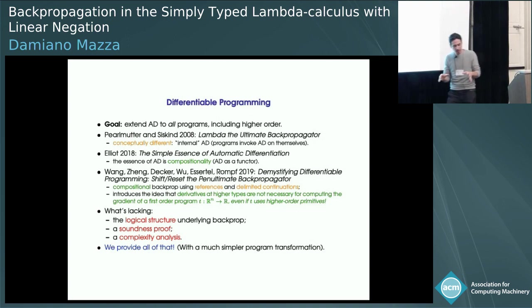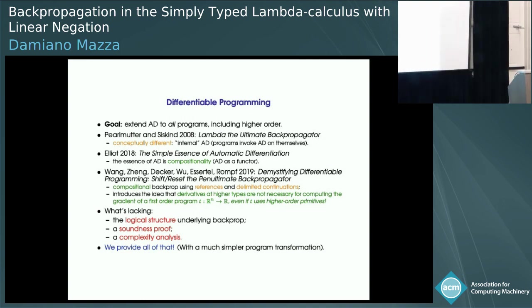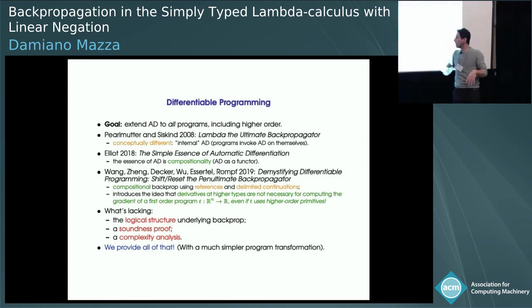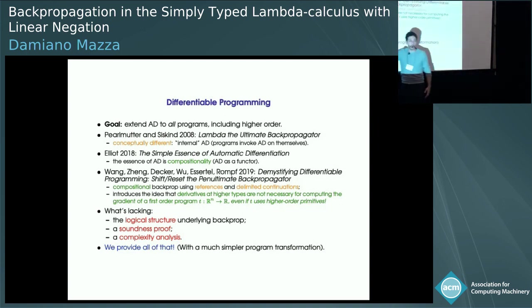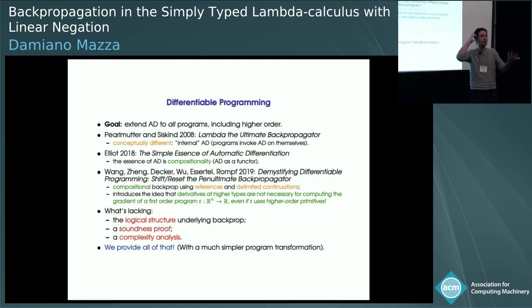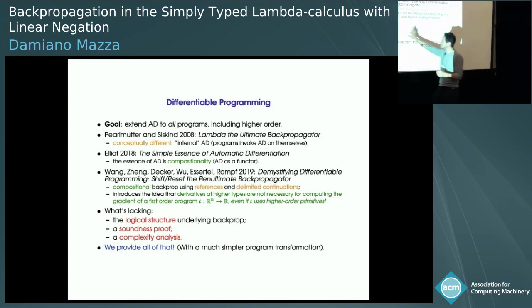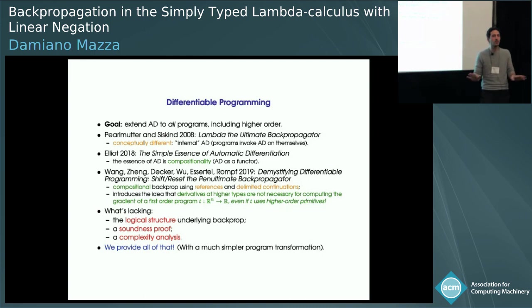The most important point for us is that this paper made us understand something we had missed. If you have a program whose interface is first-order but which internally has applications, lambdas everywhere, maps, and folds — higher order inside — you might think you need to compute derivatives at higher types. We had started doing this with the differential lambda calculus in mind. But this paper is where we understood that actually wasn't necessary, and in fact we should not do that to do backpropagation efficiently.